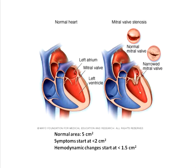The mitral valve has two cusps and is present between the left atrium and the left ventricle. It opens freely when blood empties from the left atrium into the left ventricle. Mitral stenosis is a condition which commonly occurs due to recurrent rheumatic fever, leading to narrowing of the mitral valve.